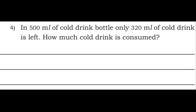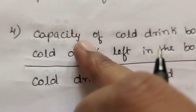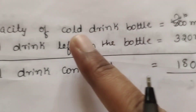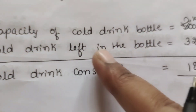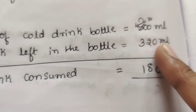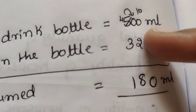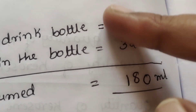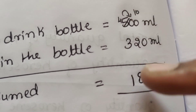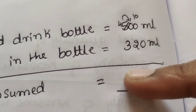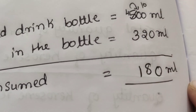Next question: In a 500 ml cold drink bottle, only 320 ml of cold drink is left. How much cold drink is consumed? Capacity of cold drink bottle is equal to 500 ml. Cold drink left in the bottle is equal to 320 ml. 0 minus 0 is 0, borrow 1, 10 minus 2 is 8, 4 minus 3 is 1. Answer: 180 ml.